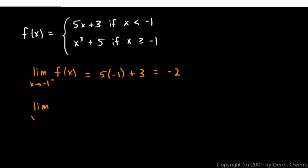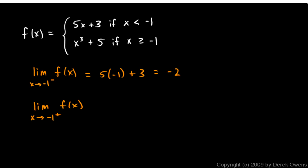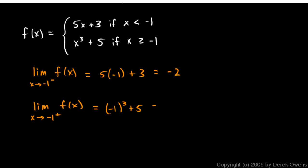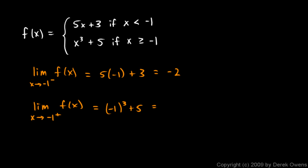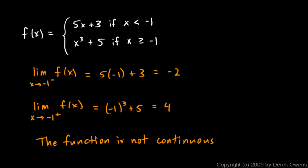Now the limit as x approaches -1 from the right: x is a little bit greater than -1, so we use x³ + 5. That gives us (-1)³ + 5 = -1 + 5 = 4. These are not the same — the left and right limits both exist, but they are not equal, so the function is not continuous at x = -1.